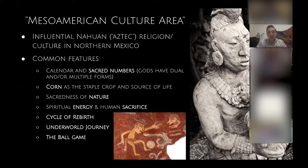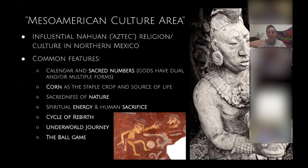The most influential culture in the broader Mesoamerican region would be the Nahuatl-speaking peoples — what we now know as the Aztecs — centered in northern Mexico. The Maya are centered in southern Mexico, Guatemala, and Belize. But they still have a lot of influence from their neighbors, including in their religion and belief system. These common features of Mesoamerican culture are all prominently featured and referenced in the Popol Vuh itself.